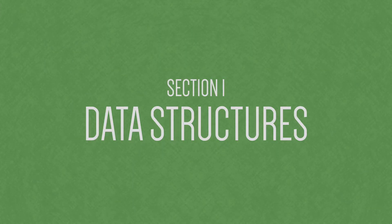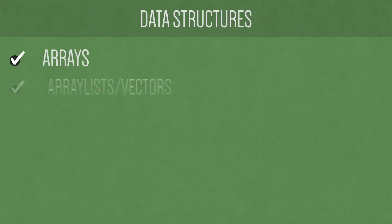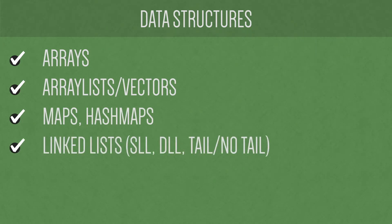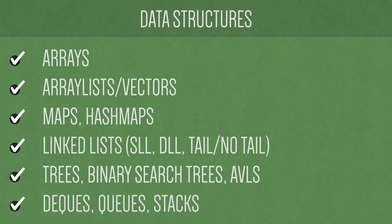First thing we're going to talk about is data structures. Knowing your data structures and your algorithms is super important before you head into an interview. Here's a short list that I think are important to know: Arrays, ArrayLists or Vectors, Maps and HashMaps, LinkedLists and all the different variants of them, Trees, Binary Search Trees and AVLs, Decks, Queues, and Stacks.